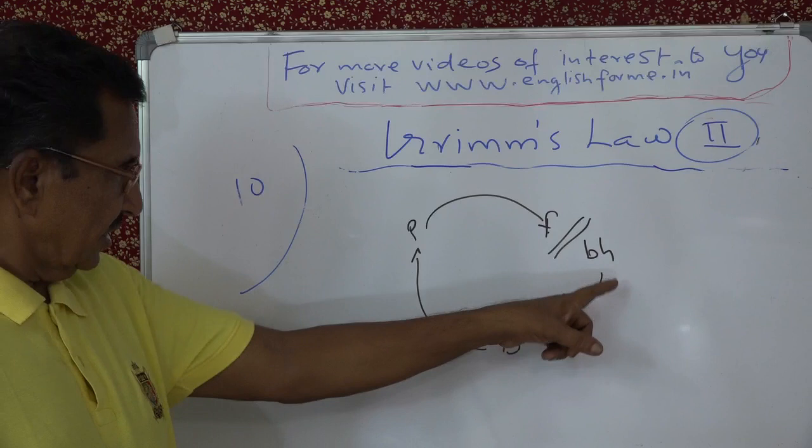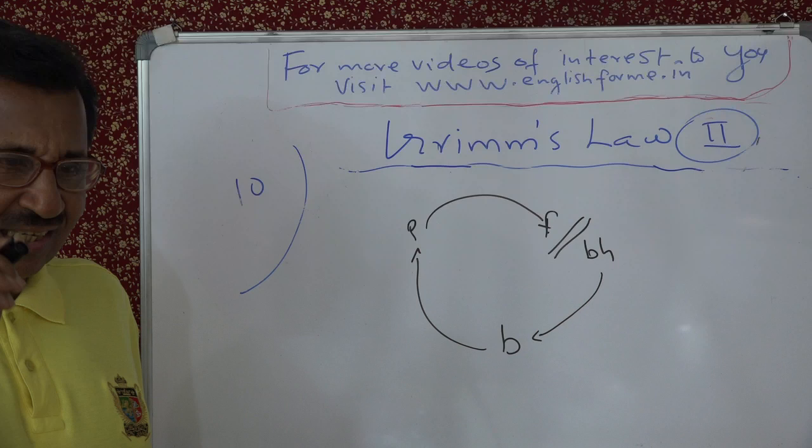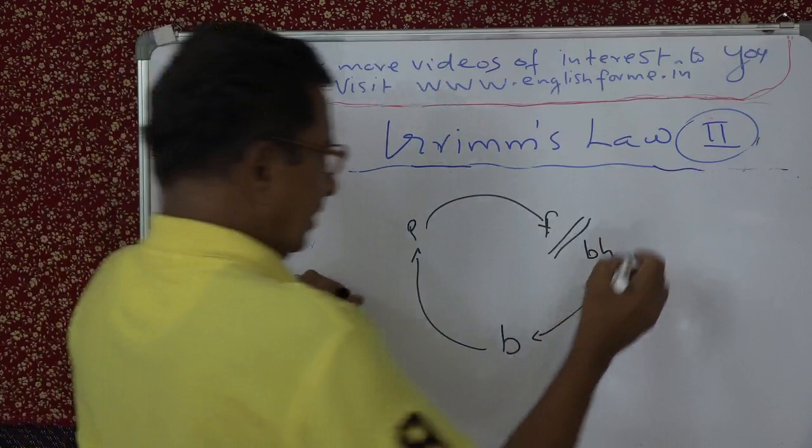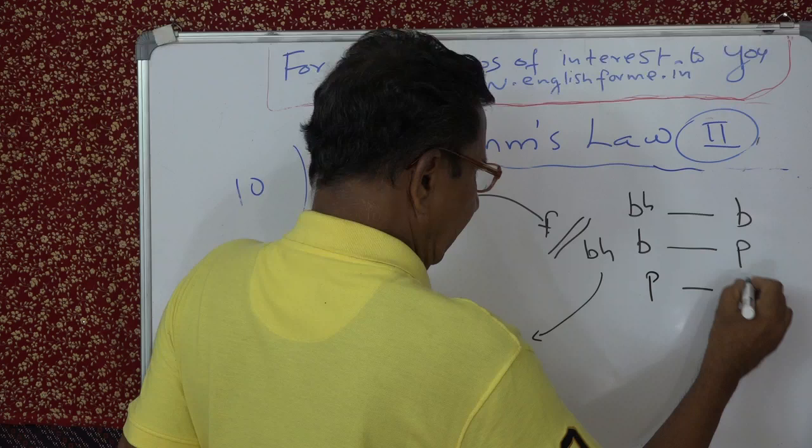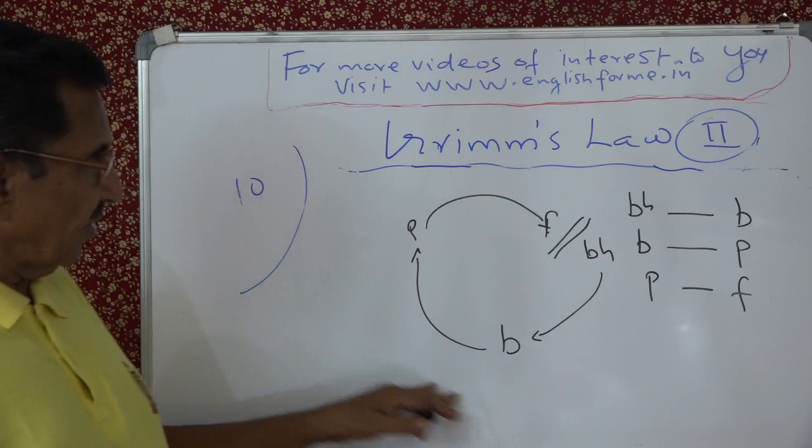The circular relationship between correspondences is its major feature — the major feature of Grimm's Law. If you put it like this: Bh has become Bh, Bh has become P, and P has become F. That is the final product. You can see the circular relationship.